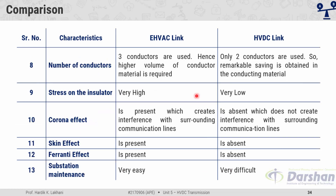In EHV AC, one circuit of a three-phase system requires three conductors, meaning a higher volume of conductor material. In bipolar HVDC, only two conductors are required, giving a remarkable saving in conducting material. Stress on insulators is very high in AC link but very low in DC. Corona effect is present in AC and creates interference with surrounding communication lines, but is absent in HVDC. Skin effect and Ferranti effect are both present in AC link but absent in DC link.